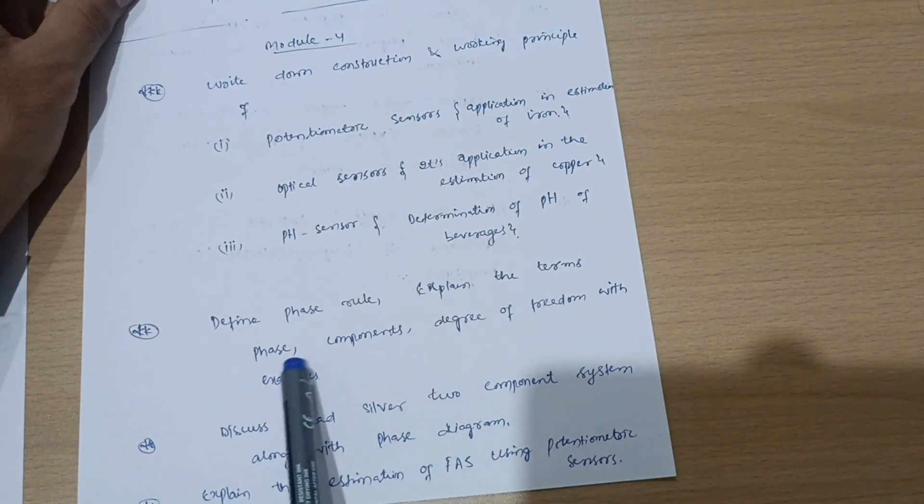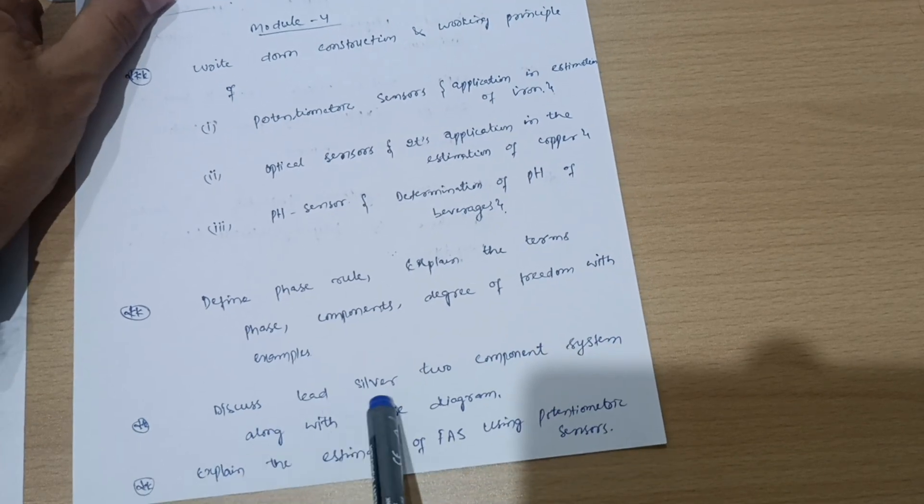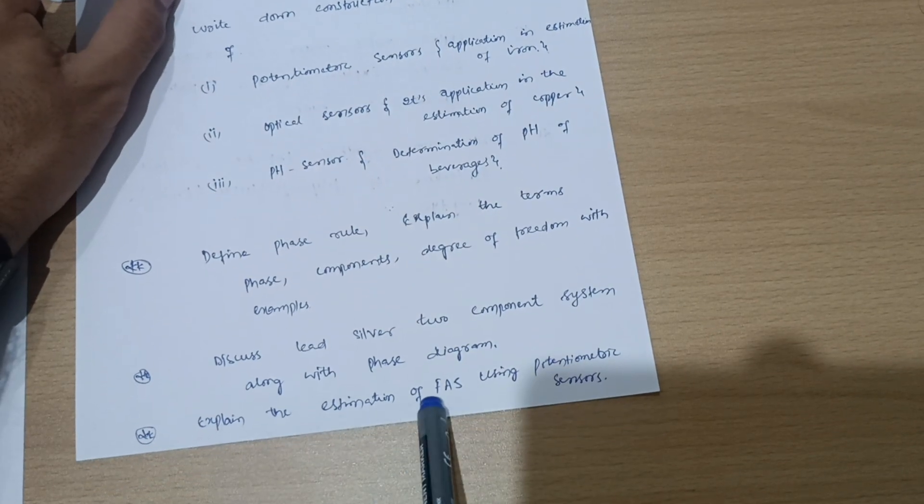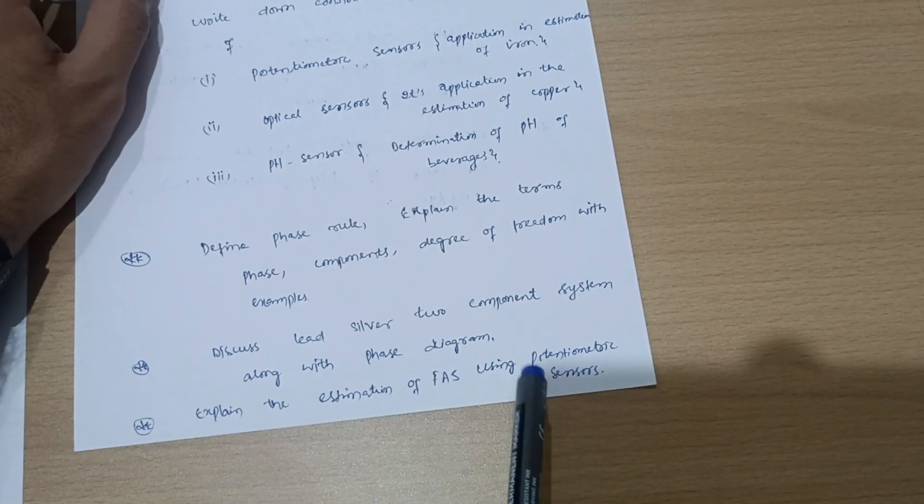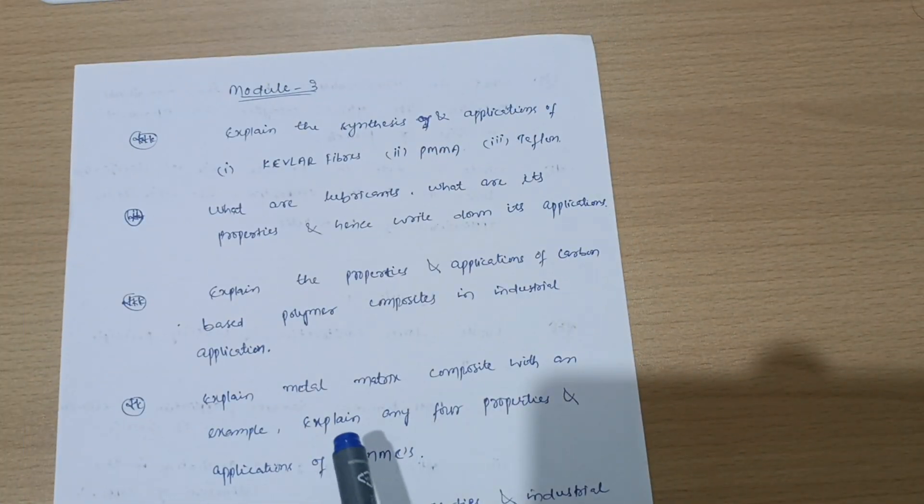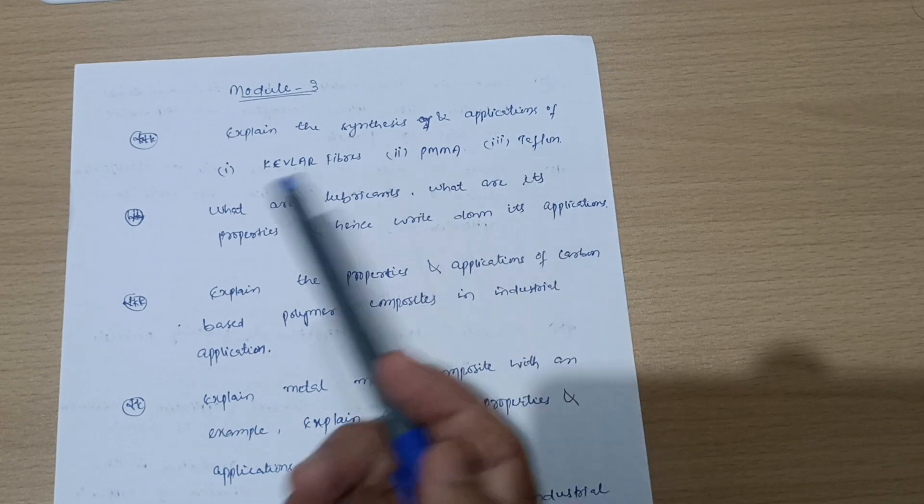Next is define phase rule, explain the terms like phase, components, degree of freedom with examples, and discuss lead-silver two-component system along with the phase diagram. Explain the estimation of FAS using potentiometric sensors. This is all about Module 4.